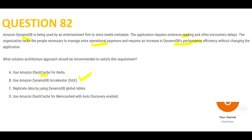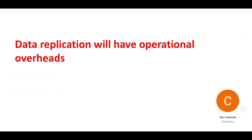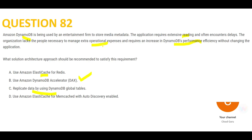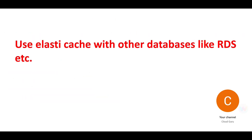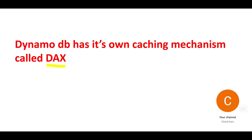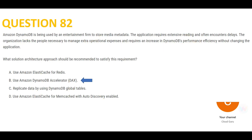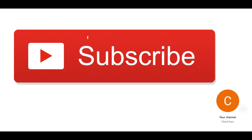Why not the other options? Option B says replicate the data — that increases operational expenses and overhead, which the question explicitly says we don't want. Option C is similarly wrong. Option D says use ElastiCache — but ElastiCache is only for databases like RDS; DynamoDB has its own caching. So DAX is the final answer.